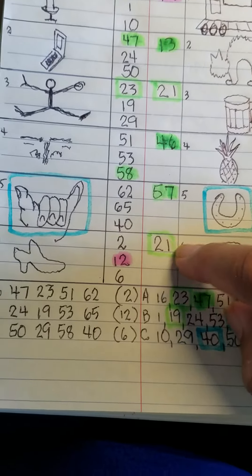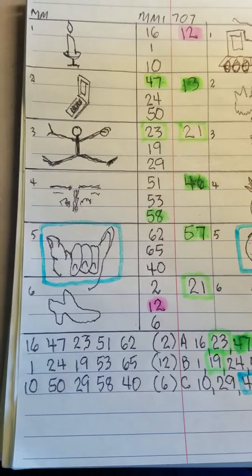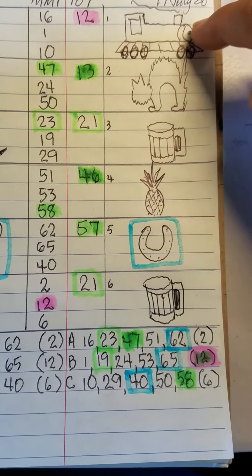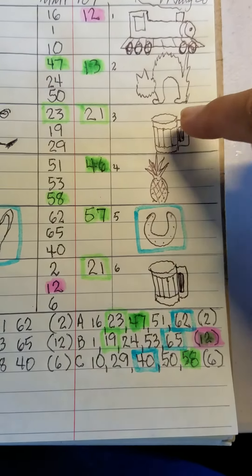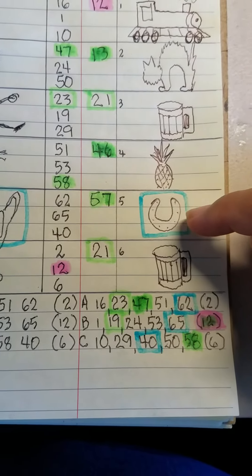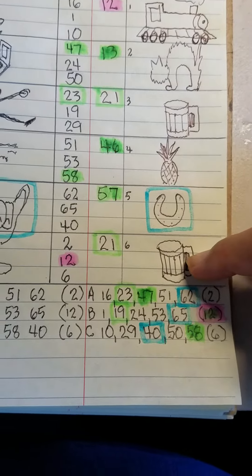The images that should have been drawn here for my feedback: it was a train, a cat, a beer mug, pineapple, and the horseshoe, and the beer mug again. If you take a look at the 50s, my last number here, the shaka sign and the horseshoe, you notice that both of them have...